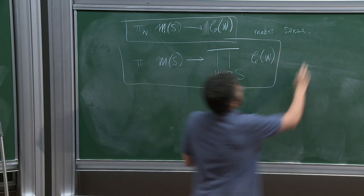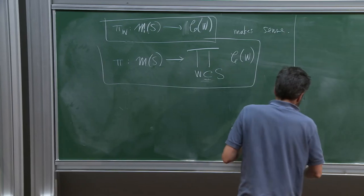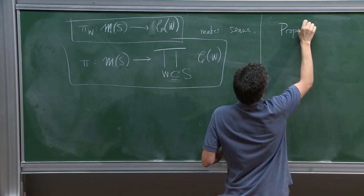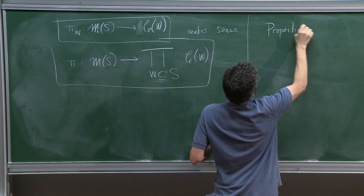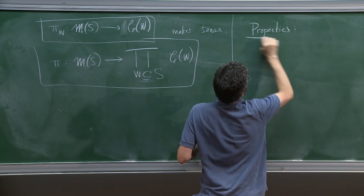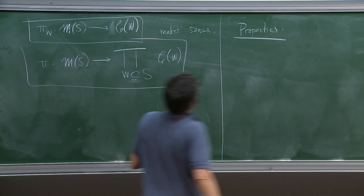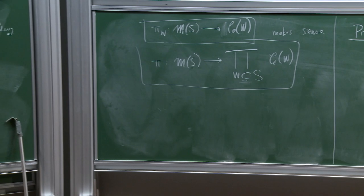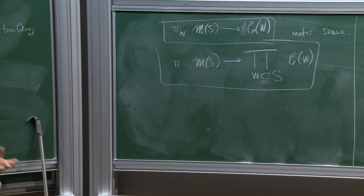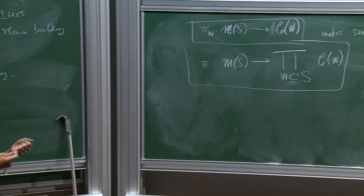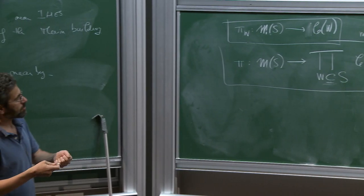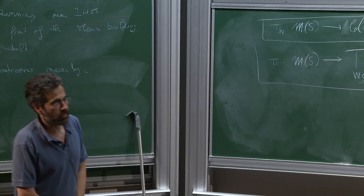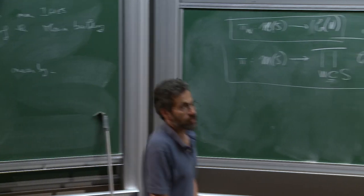I can put all these together and call it pi from the marking graph into the Cartesian product of all of these curve complexes — just use these as the coordinates of this map. It looks like a natural thing to do: I've mapped my group into some enormous product space. All I have to do is understand the product space and understand the image, and I know something. The goal is to understand this. Let me describe some properties of this whole construction, say a little bit about what they mean, and then give you an actual example of using these properties to do something.